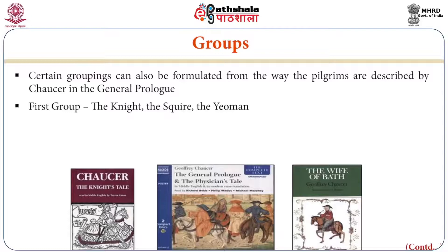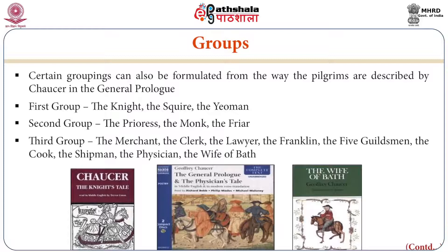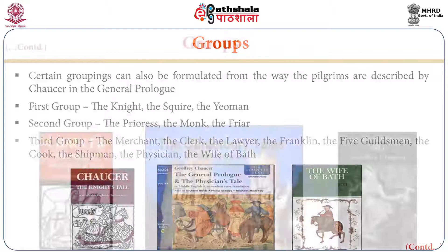The first group: the Knight, the Squire, and the Yeoman. The second group: the Prioress, the Monk, the Friar. The third group: the Merchant, the Clerk, the Lawyer, the Franklin, the five Guildsmen, the Cook, the Shipman, the Physician, the Wife of Bath.